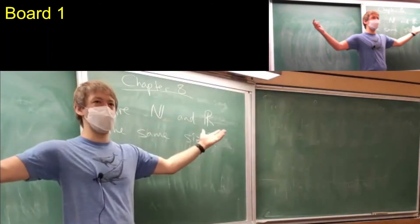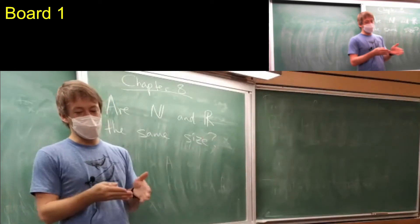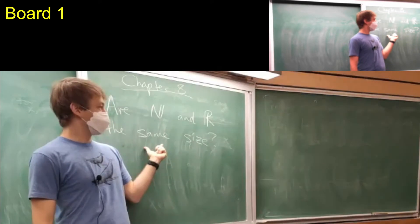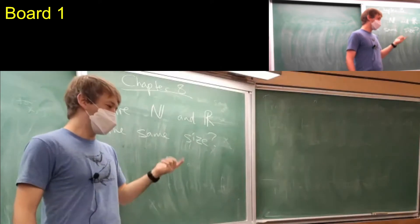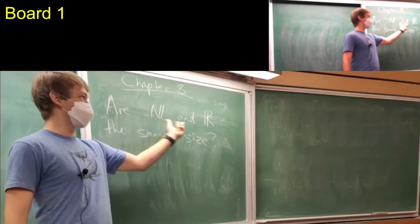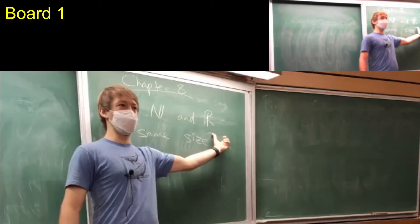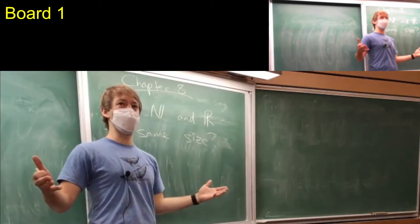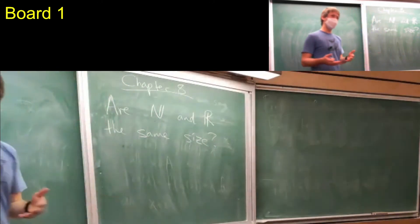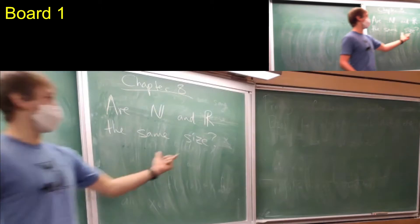They're both infinite size, so if you just think infinity equals infinity, they're the same size. But there's another reason — there's a good reason why they might not be the same size. Like, this one is a subset of that one. Clearly it seems like the real numbers has more stuff in it than the natural numbers. So that kind of pushes you in the other direction. Maybe they're not the same size. Maybe this one's bigger.